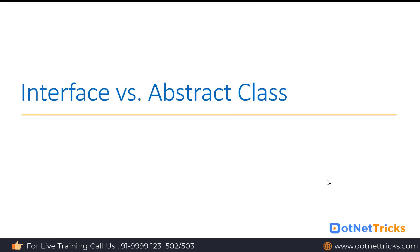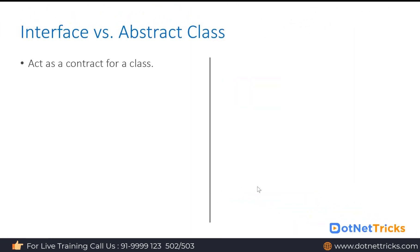Interface versus abstract class — let's understand the difference. An interface acts as a contract for a class, just like an agreement between two parties. If there is any change in the contract, there is always dispute between the parties. Similarly, if you change the interface, whatever class is implementing it has to implement the newly added methods and follow the changes. Abstract class acts as a strict parent having rules and regulations that every child must follow, with both abstract and non-abstract methods.